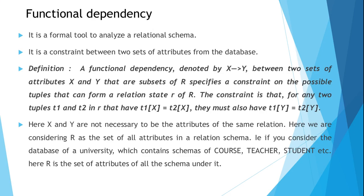Functional dependency is a formal tool to analyze a relational schema, or to analyze the quality of a relational schema. It is a constraint or a condition between two sets of attributes in a database. Functional dependency is denoted by X to Y, representing a dependency between two sets of attributes X and Y that are subsets of R.